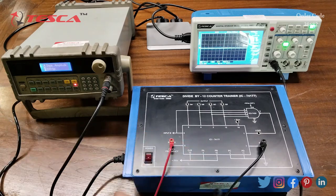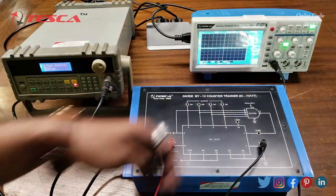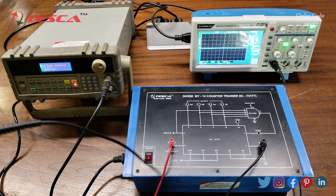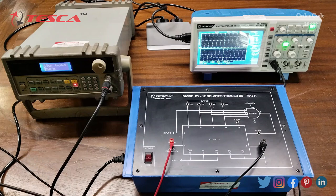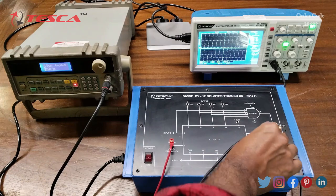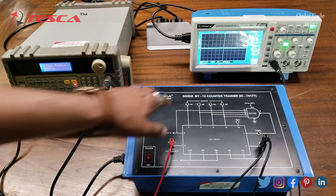Now we will observe the waveform on the DSO. We will connect the BNC cable across channel 1 of the DSO, connect the ground to the ground, and observe the waveforms on the output ports QA, QB, QC and QD.